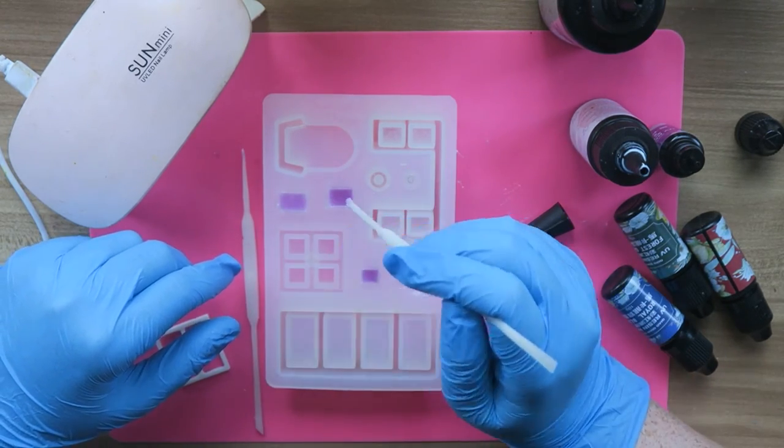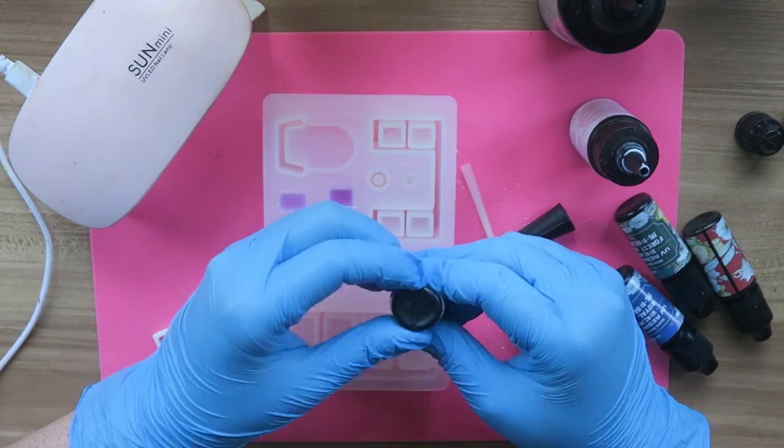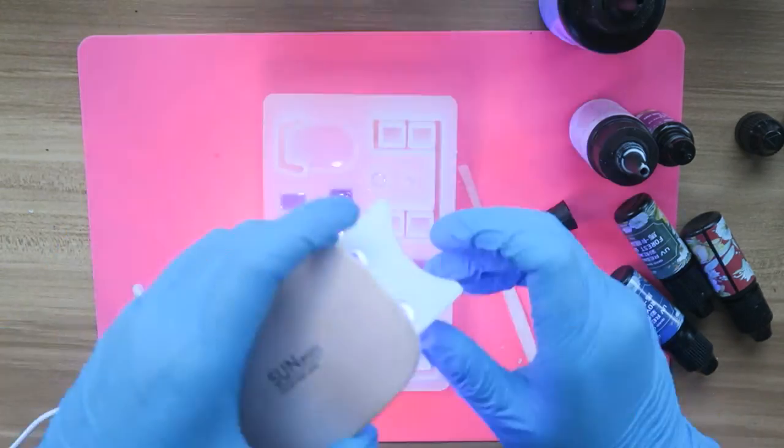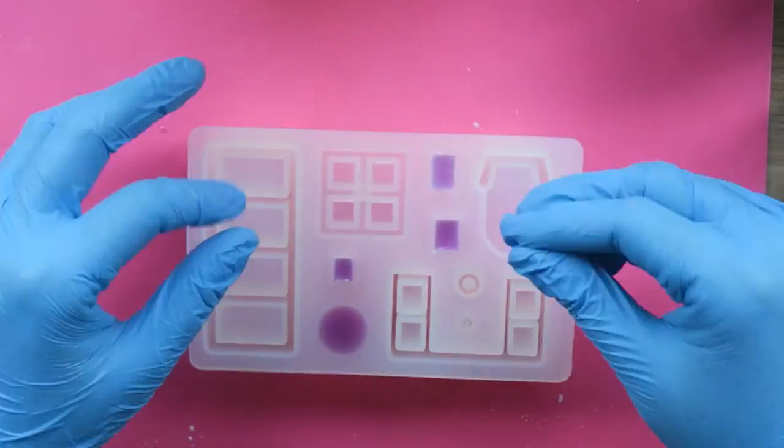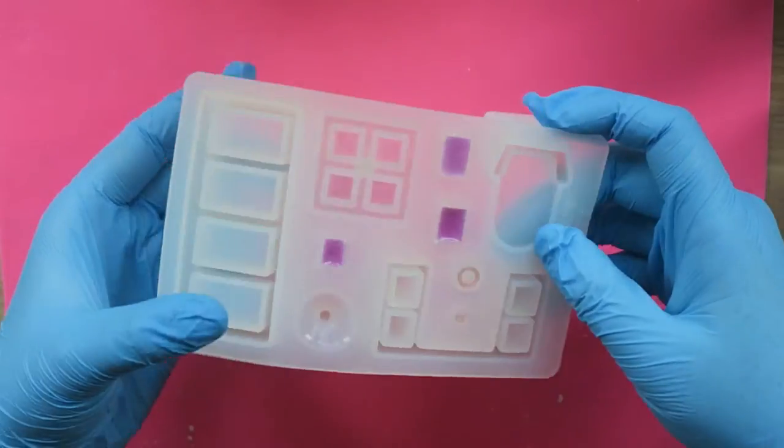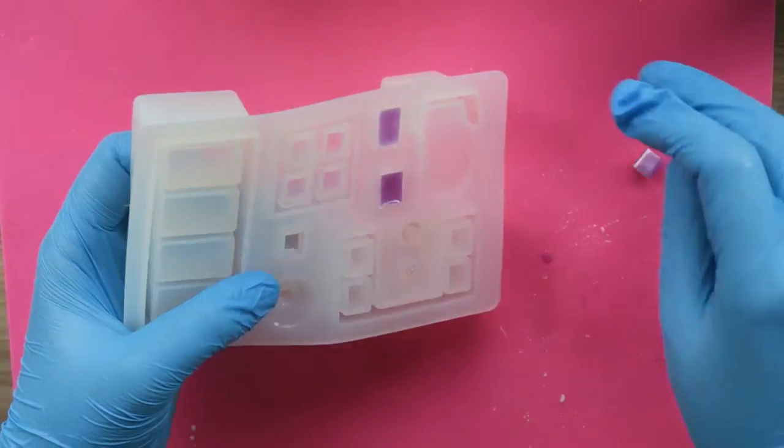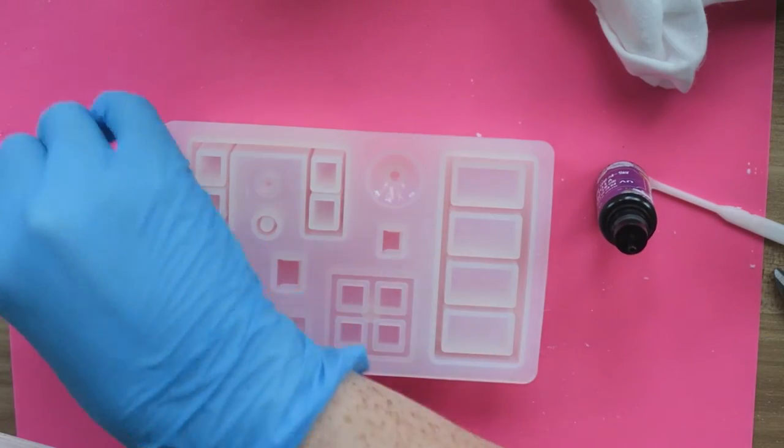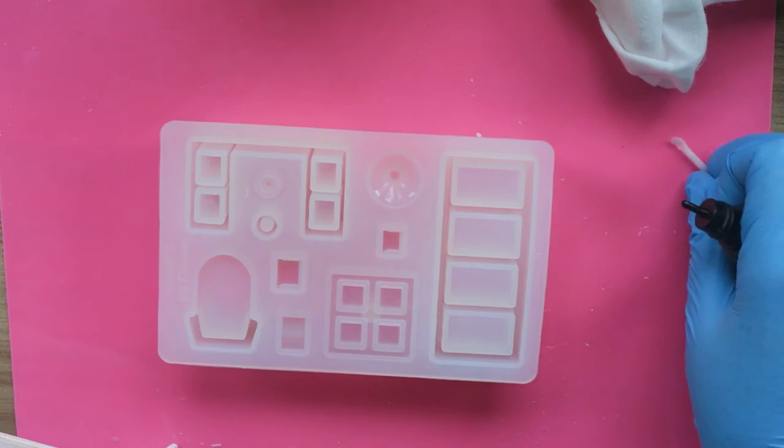And then I give this a final cure with my UV lamp. After this cure, my pieces are fully hardened so I can take them out of the mold. So I'm just going to pop them out of the mold. And then I'm going to set the books to the side as I make the rest of the mold. So I'll add the books to the bookshelf later.